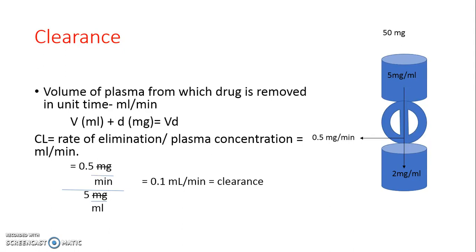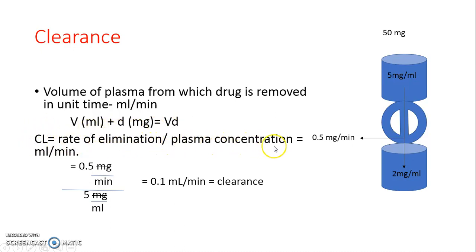So if we have a volume of plasma and we give an amount of drug, the total drug in that volume of plasma is represented accordingly. The formula for clearance is: rate of elimination divided by plasma concentration, and it is expressed in milliliter per minute.